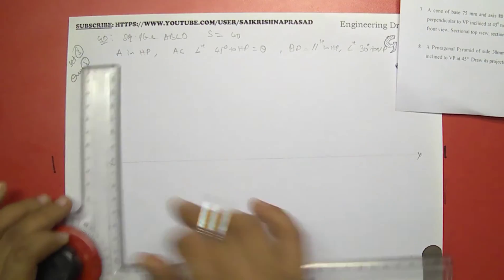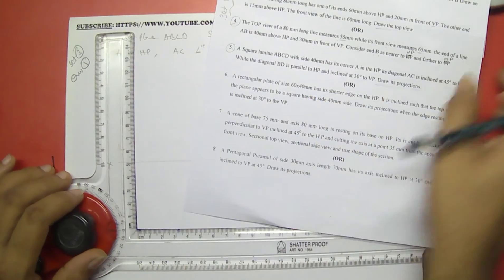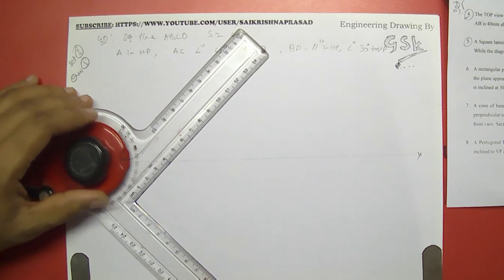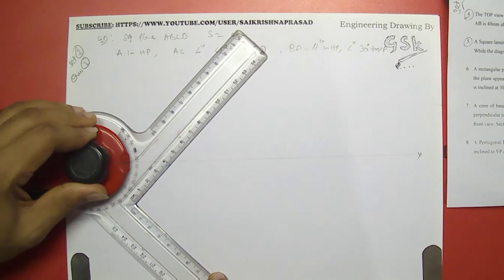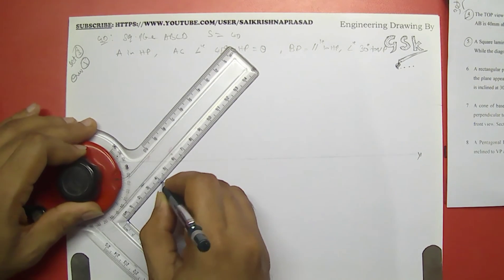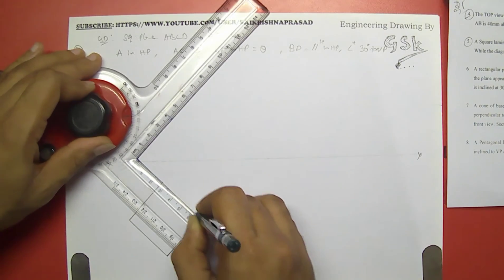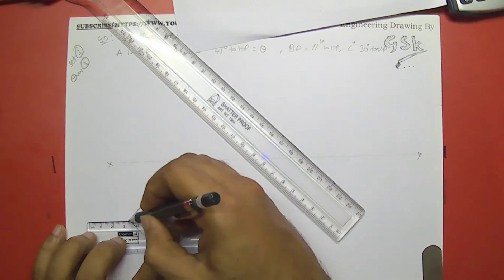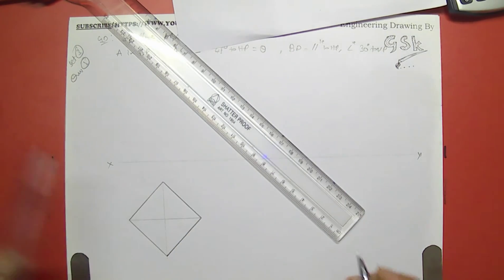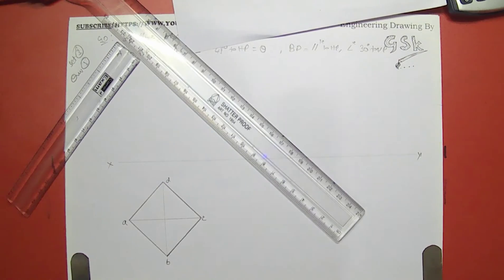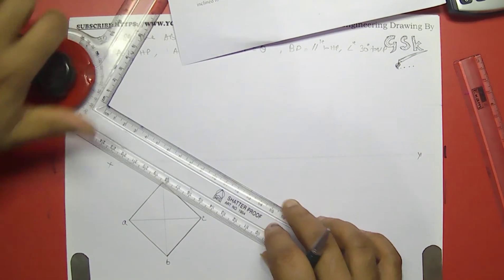Let us start the problem. A is in the HP and AC is inclined at 45 degrees to the HP. I will be taking the figure like this — our plane is 40 mm of side, this is a square lamina or square plane. This is A, this is C, this is B, and this is D. Mentioning the dimensions over here.